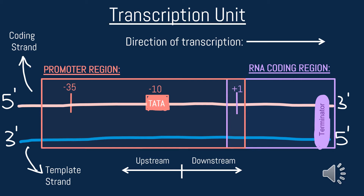The negative 35 and negative 10 sites are consensus sequences that serve an important function for initiation of transcription. The plus one marks the place of the transcription start site. It also is part of the RNA coding region where nucleotides for RNA are transcribed before transcription termination by a terminator.